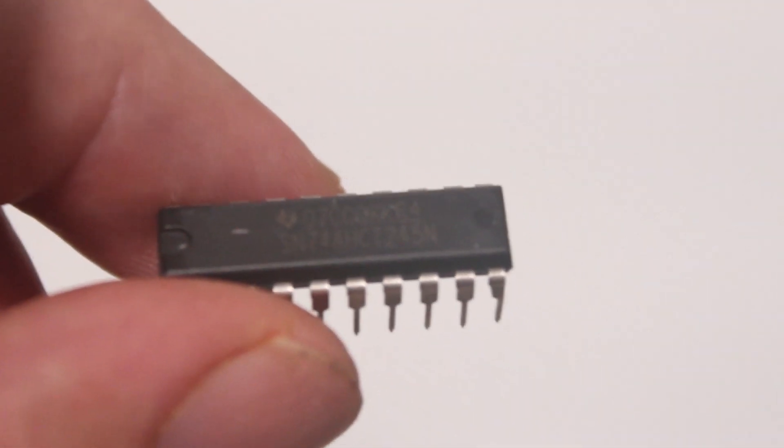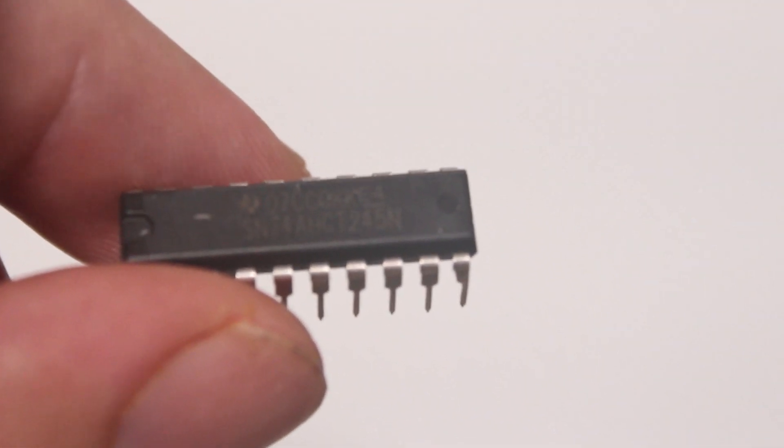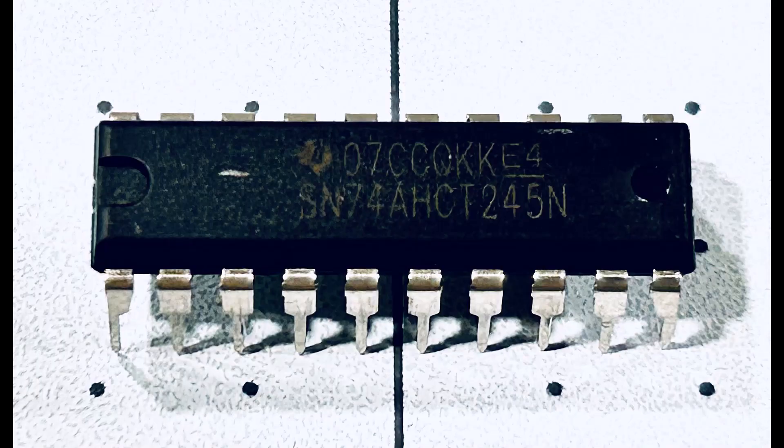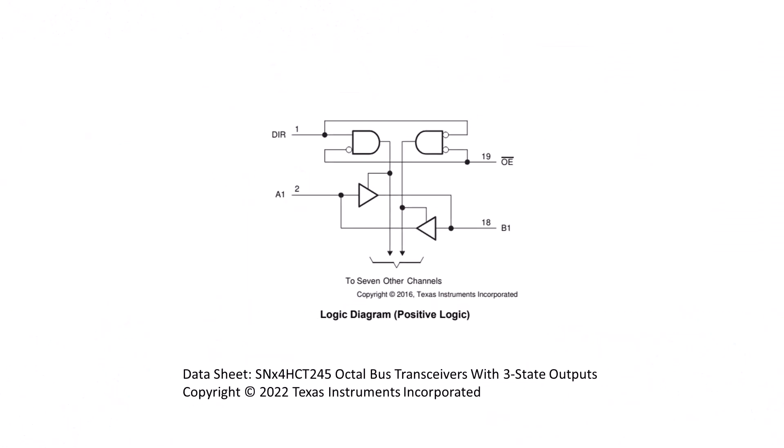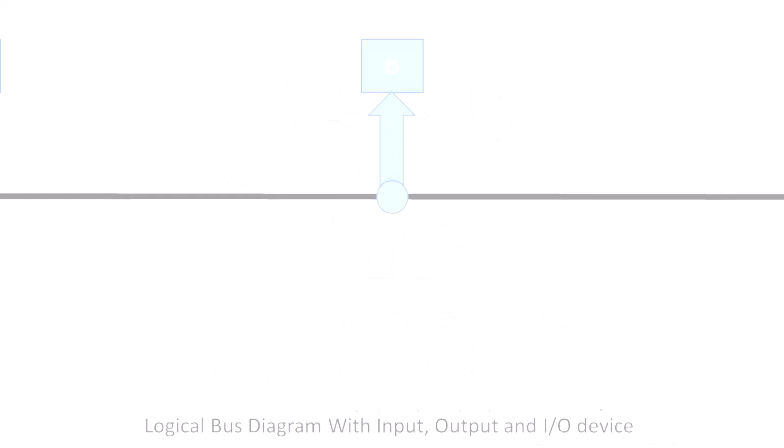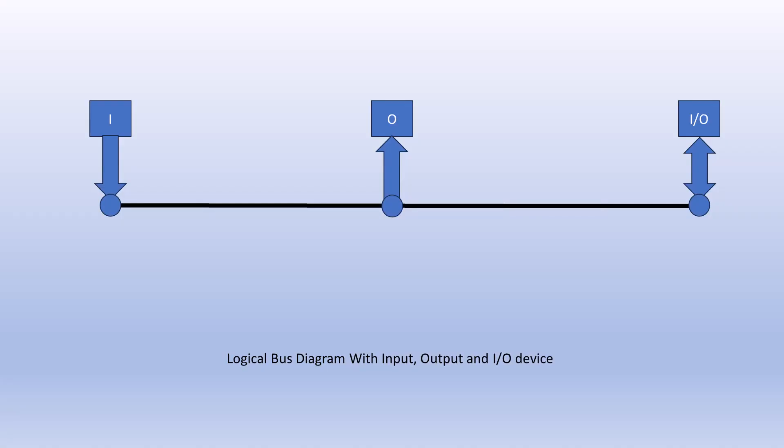This integrated circuit is a 74HCT245 bi-directional octal bus transceiver with tri-state output. So what does all that mean and why would you need this chip? First, let's start with why you need one.